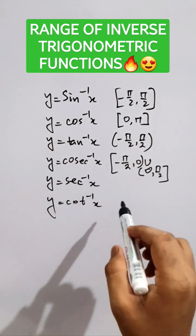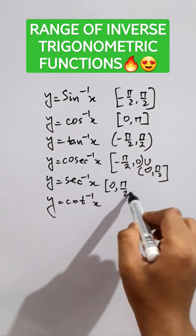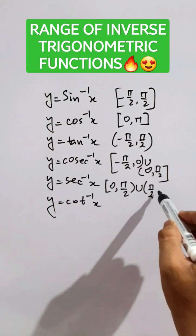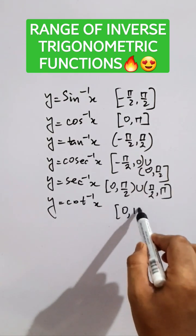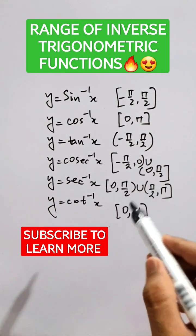Now, for the sec inverse x, it will be closed 0 to pi by 2 open union open pi by 2 to pi. And for cot inverse x, it will be closed 0 to pi. Thus, you can remember and utilize these formats.